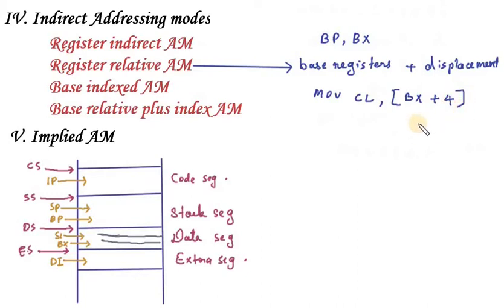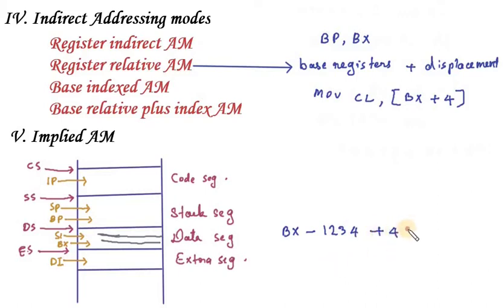Here, BX points to a particular address. BX plus 4 means you move 4 bytes forward from where BX points — so the address becomes location 1, 2, 3, 8 (i.e., BX+4). At that particular address, the data is 8 bits — one byte. That byte is then moved into the CL register. So the location referred to is the address of the data.